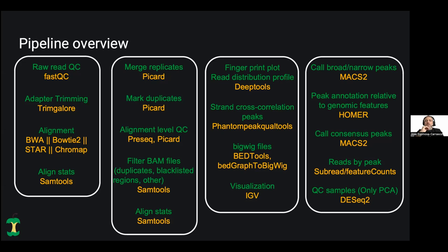The blacklisted regions are also removed — these are regions in the genome that are difficult to align, and they are known and removed with specific tools. After all these steps, additional alignment statistics are calculated. We produce a fingerprint plot and read distribution profiles, which can also be seen as quality control plots because you can see the distribution of profiles of the factors binding to the DNA. The strand cross-correlation peak procedure is run with phantom peak quality tools.